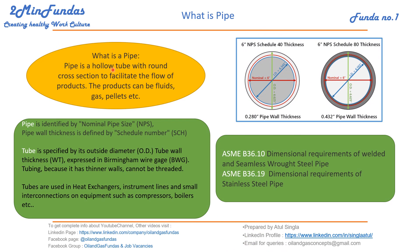What is pipe? Pipe is a hollow tube with a round section to facilitate the flow of a product. The product can be fluid, gas, or pellet. Pipe is identified by nominal pipe size (NPS) — for example, 6 inch NPS — along with the schedule number, which indicates the thickness of the pipe.